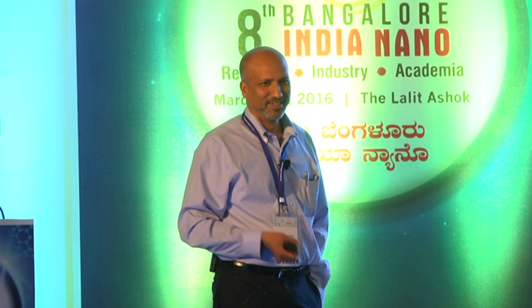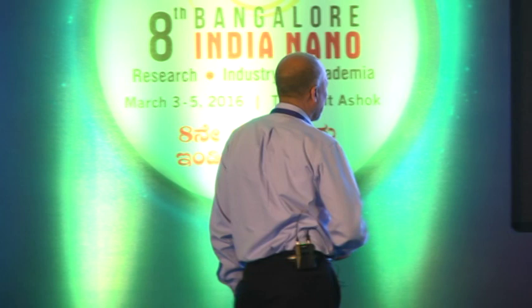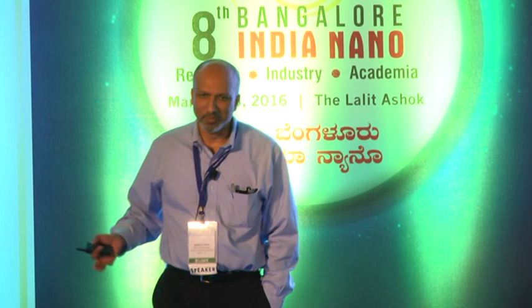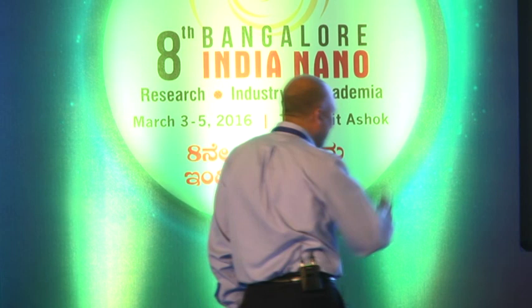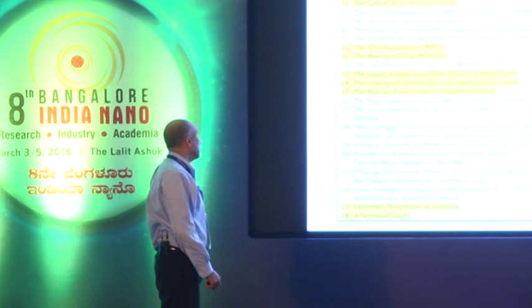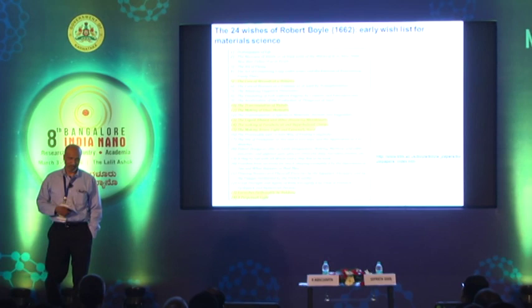Any guesses? It's the need for computing. It doesn't exist in this list, even though Robert Boyle was a good mathematician. At that time, the logarithmic tables had already come out, and people were already trying to make mechanical computers. But information processing, computing — that is glaringly absent in this list. And that is going to be the subject of my talk today.